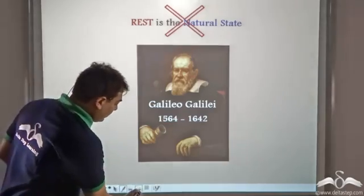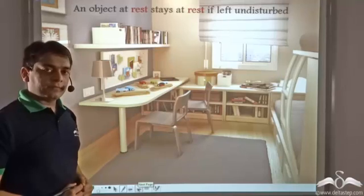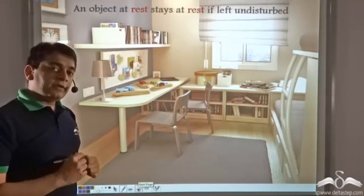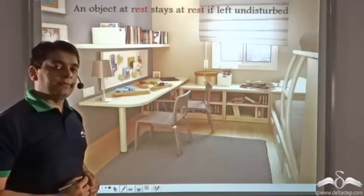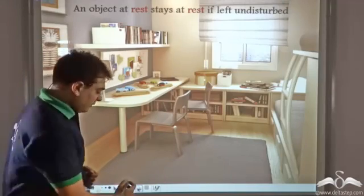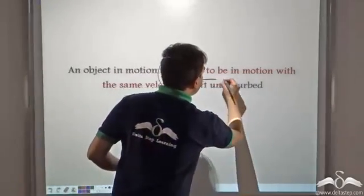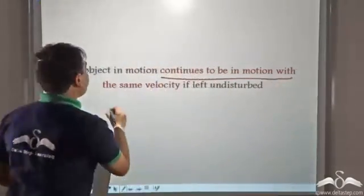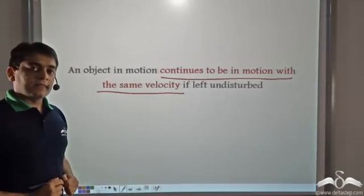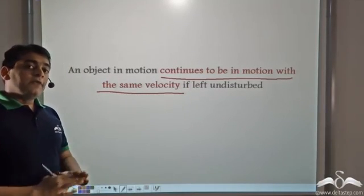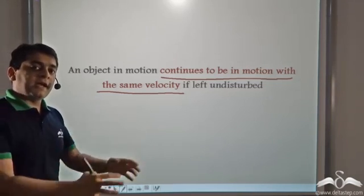Galileo agreed that an object at rest stays at rest if left undisturbed. But he did not agree that a moving object has a tendency to come to rest. Instead, he said that an object in motion continues to be in motion with the same velocity if left undisturbed. That is, a moving object would never stop unless a force is applied to it.